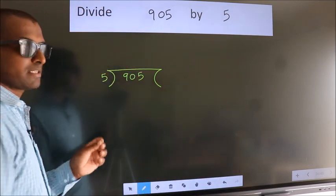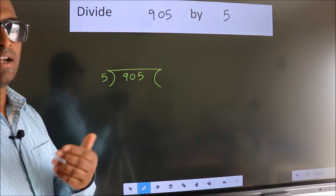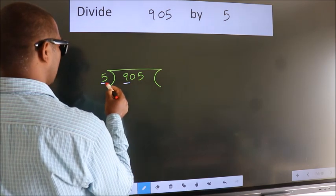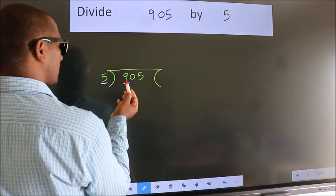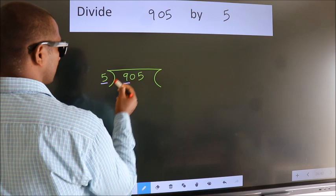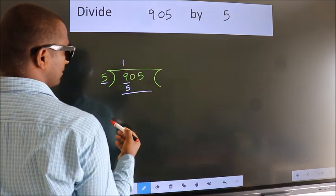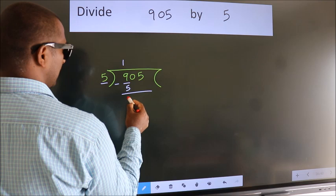This is your step 1. Next, here we have 9, here 5. A number close to 9 in the 5 table is 5 once 5. Now we should subtract. We get 4.